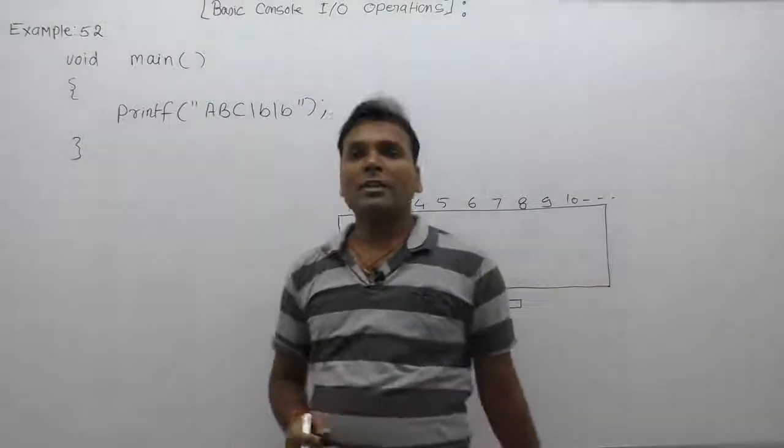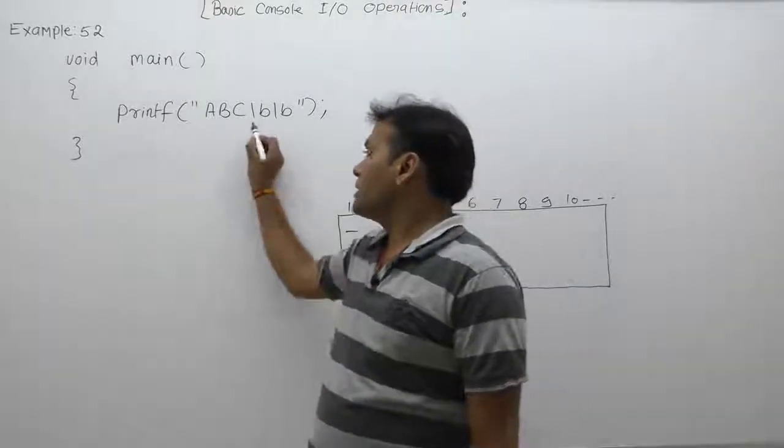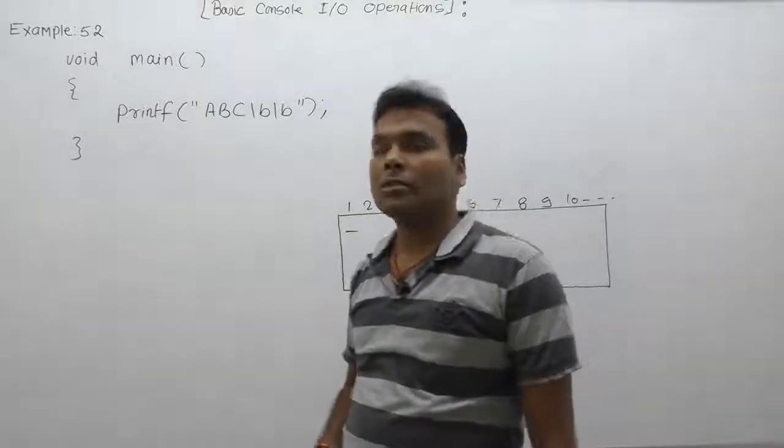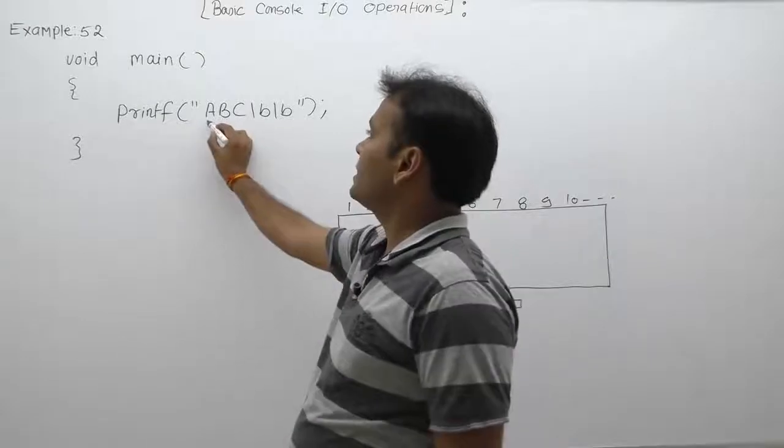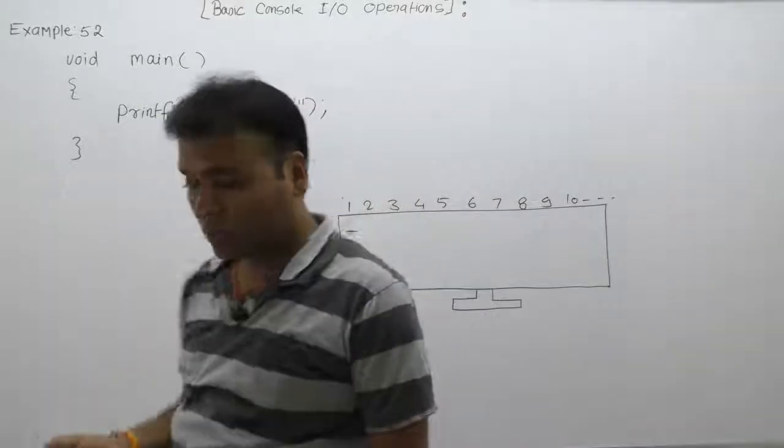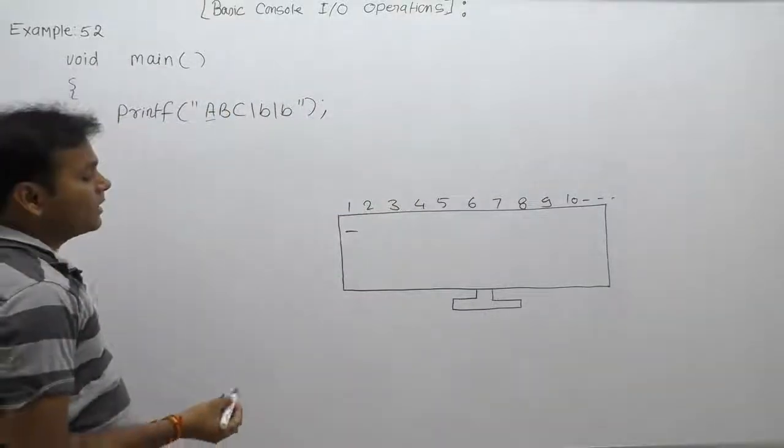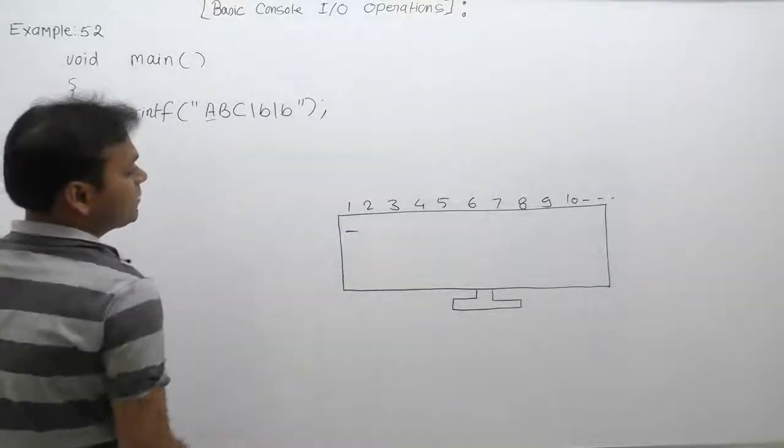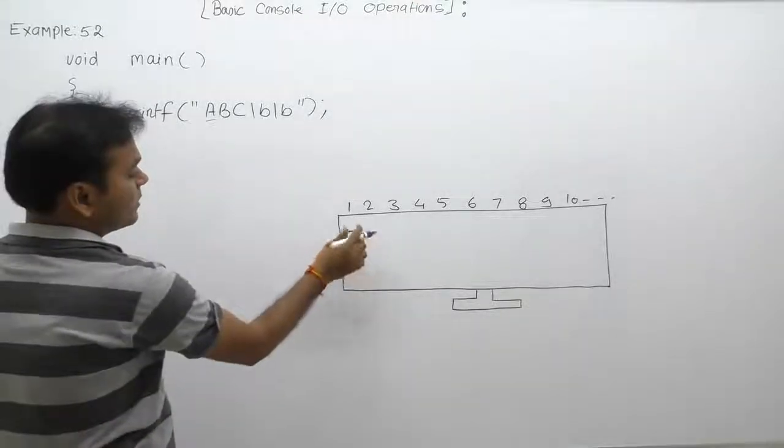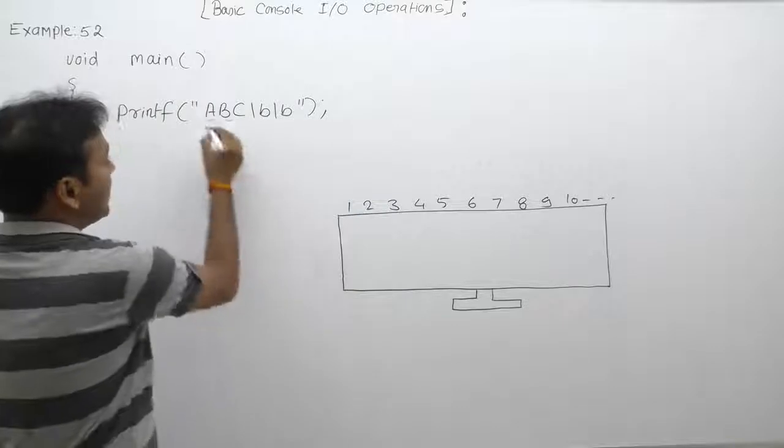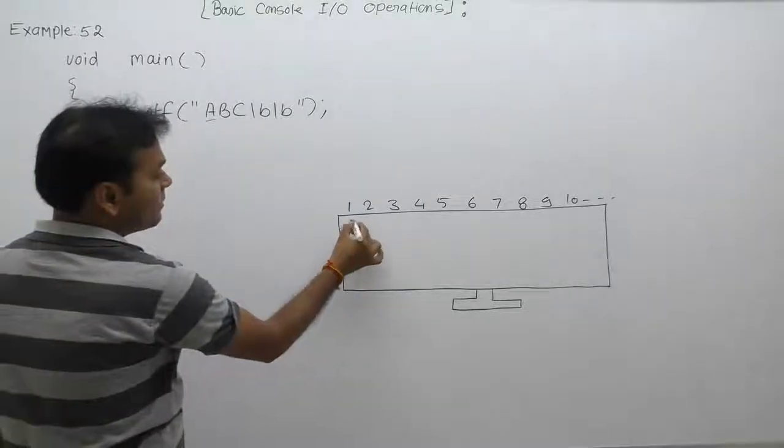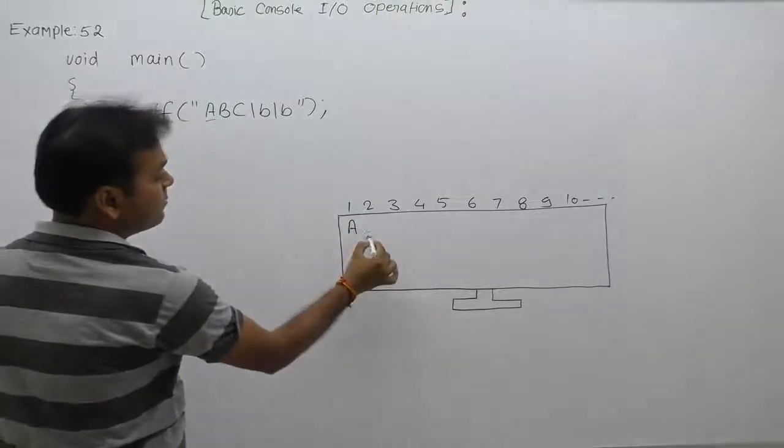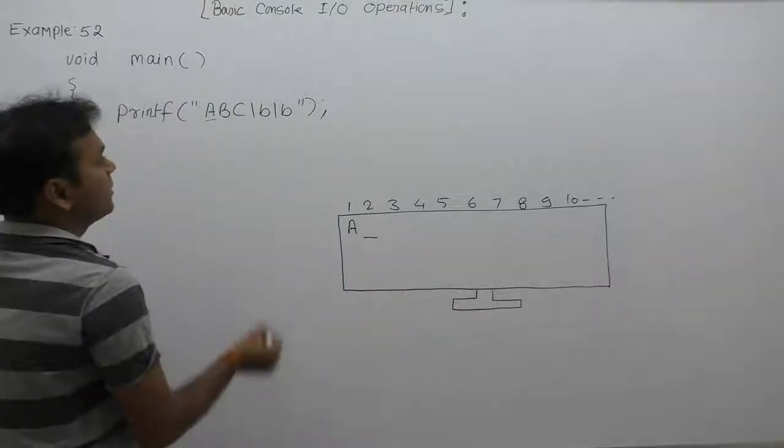Next one, what is the output result of that program? Here we are using slash b twice. First of all, this will print character 'a' on the monitor from the current position onwards. The current position of the cursor is the first position. After printing 'a', the cursor will be moved to the next position.